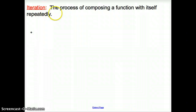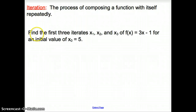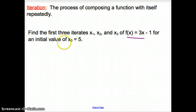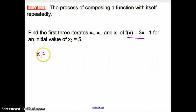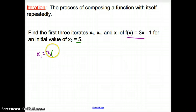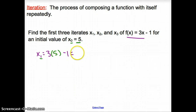The last vocab word is iteration — the process of composing a function with itself repeatedly. We're asked to find the first three iterates x_sub_1, x_sub_2, and x_sub_3 of our function f(x) = 3x − 1 for the initial value x_sub_0 = 5. For x_sub_1: three times x_sub_0 (which is 5) minus one equals fourteen.